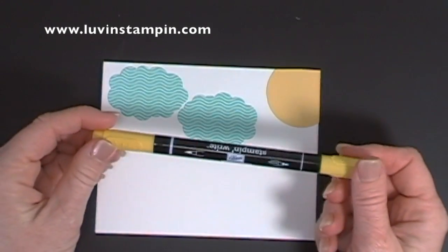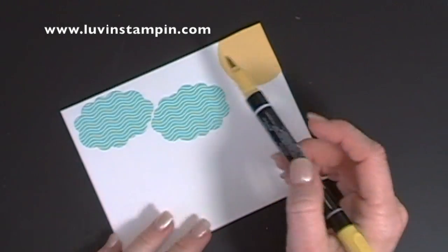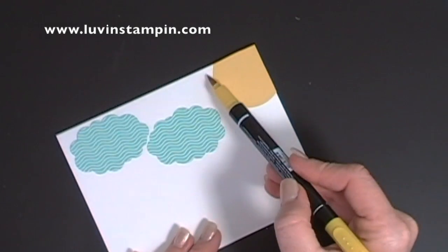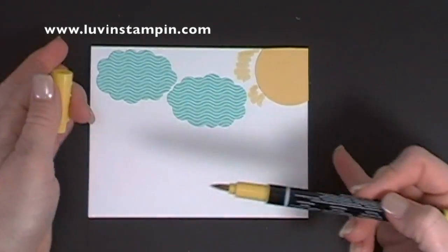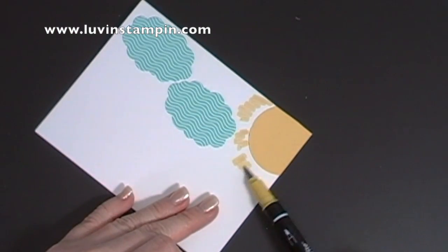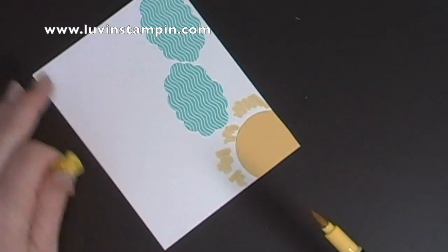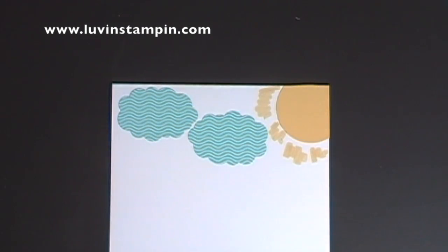All right, then I'm taking my So Saffron Stampin' Right marker, and I just am using the brush tip, and I'm going around and just going to color, leaving some breaks in between, like that. So now I have my sun rays.